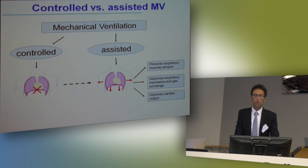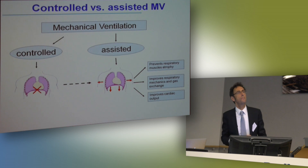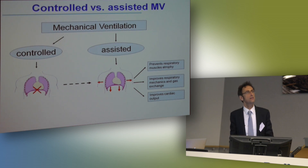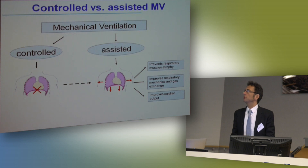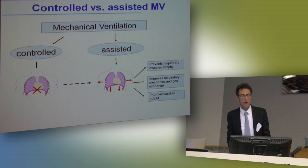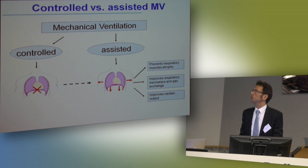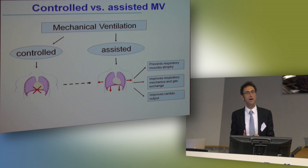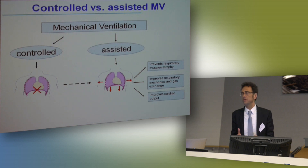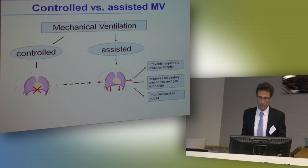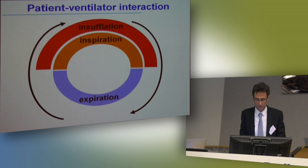As opposed to controlled mechanical ventilation, in which the patient is passively inflated by the ventilator with strictly controlled mechanical ventilation and the respiratory muscles are inactive, as soon as we switch to assisted mechanical ventilation, the respiratory muscles are active. This is a great challenge because the ventilator has to cope with this respiratory muscle activity.